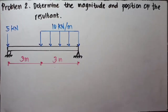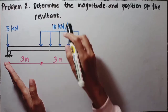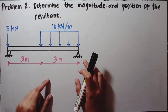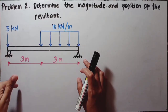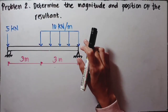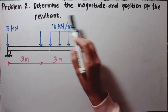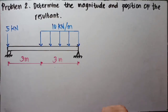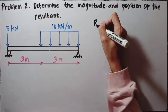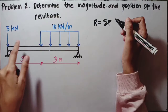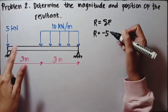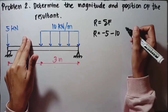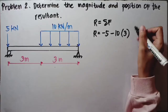Let's solve another problem. For Problem 2, we determine the magnitude and position of the resultant. Based on this figure, we have two supports — a roller and a hinge. There is a point load going down, and a uniform load of 10 kilonewtons per meter. Unlike the previous problem, which used pounds and inches, we now use kilonewtons and meters. First, we solve for the resultant: R equals negative 5 — going down — plus negative 10 times 3.